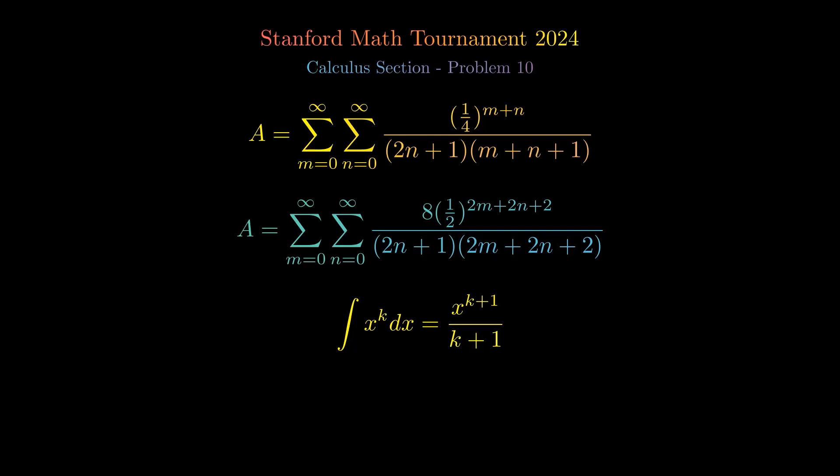Using this, we reformulate our summation into an integral-based approach, rewriting A as 8 times the integral from 0 to 1 half of the sum of x raised to the power of 2m, multiplied by the sum of x raised to the power of 2n plus 1, divided by 2n plus 1, all with respect to x.